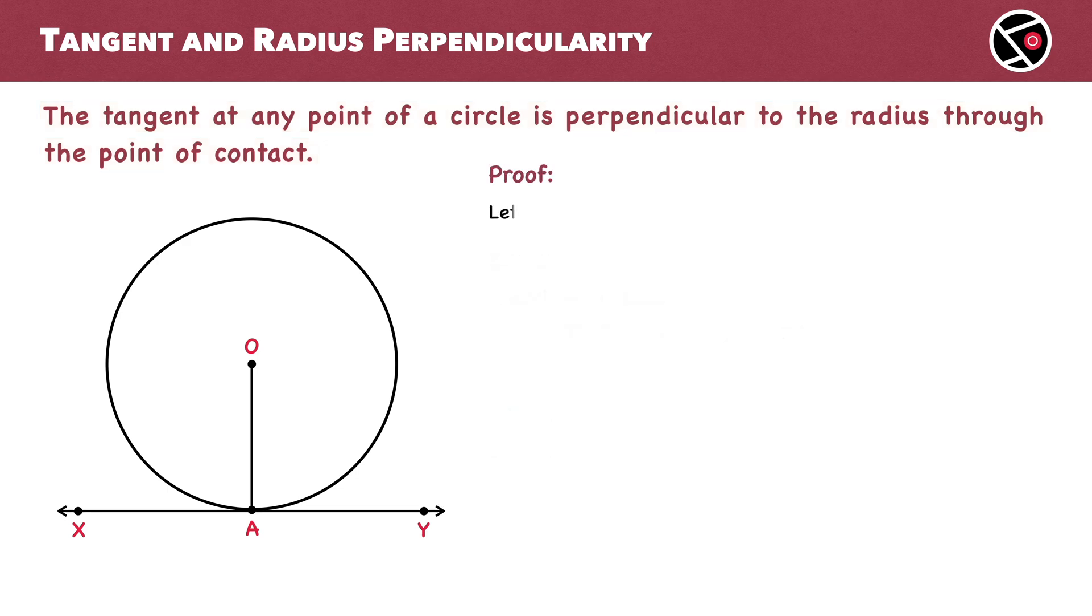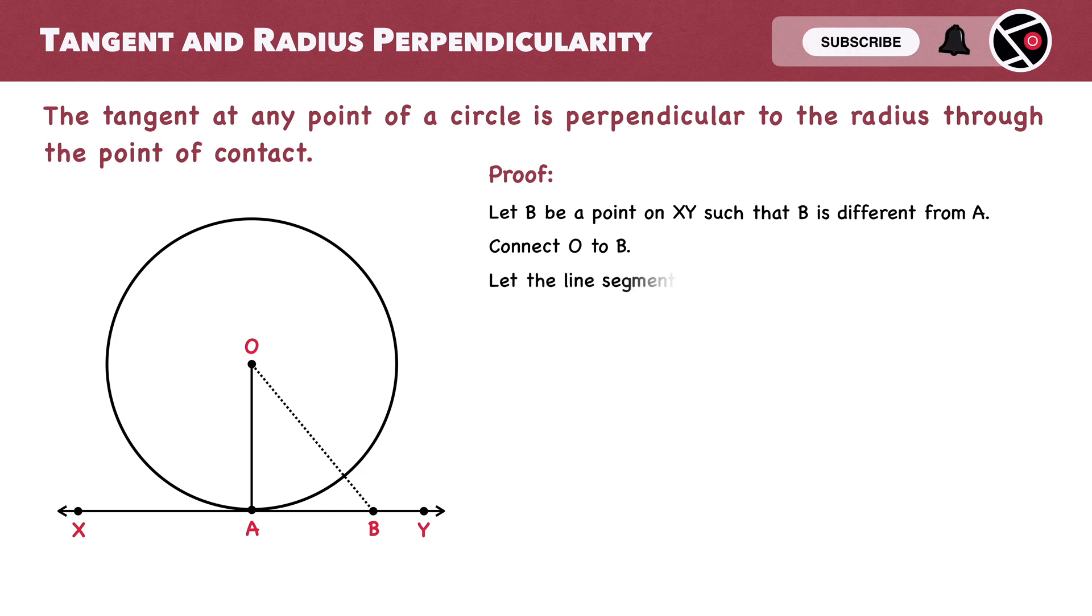First, pick a point B on the tangent XY such that B is different from point A. You can pick any point on XY but just make sure this point doesn't overlap with point A. Now connect center O to B and let this line segment OB and the circle intersect at point C. Now the length of OB can be expressed as a sum of OC and CB.